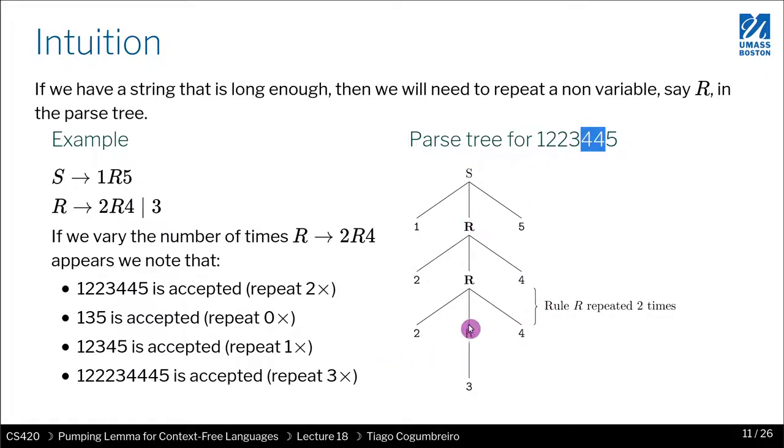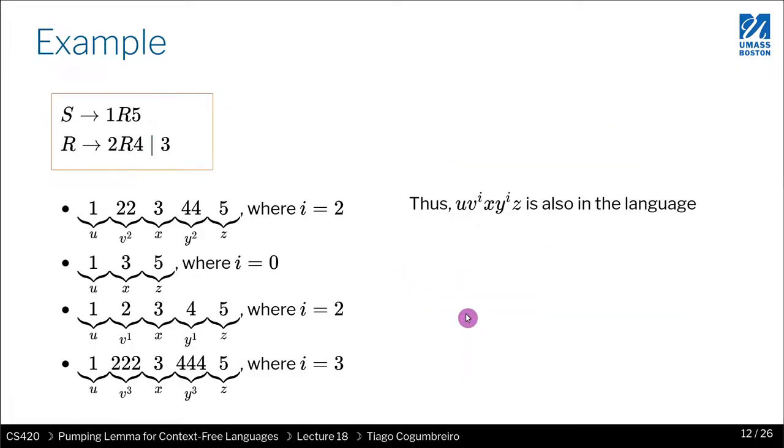So you get this bit and the bit on the right is being pumped n times. And because I can replace r by the whole sub-tree, I can repeat that many times. And the intuition is that any pumped string is also in the language. So let's clarify that.